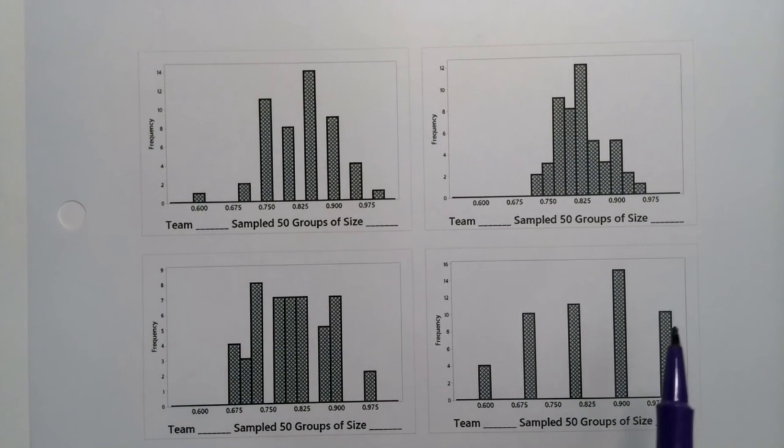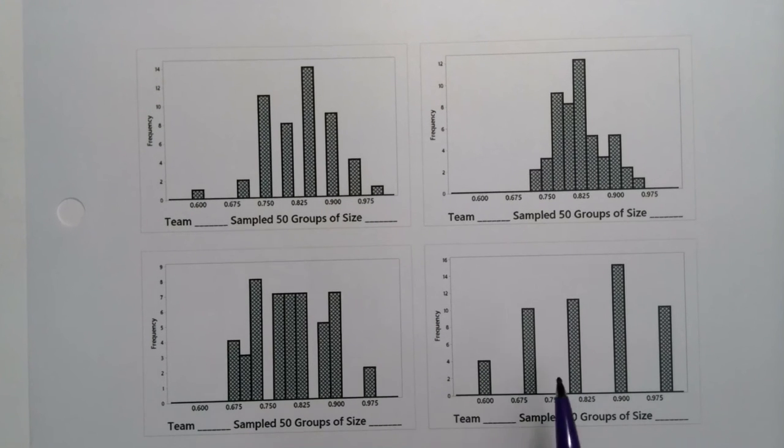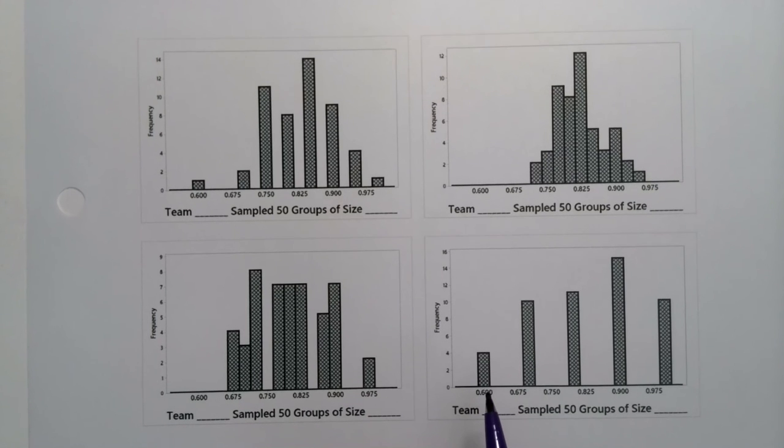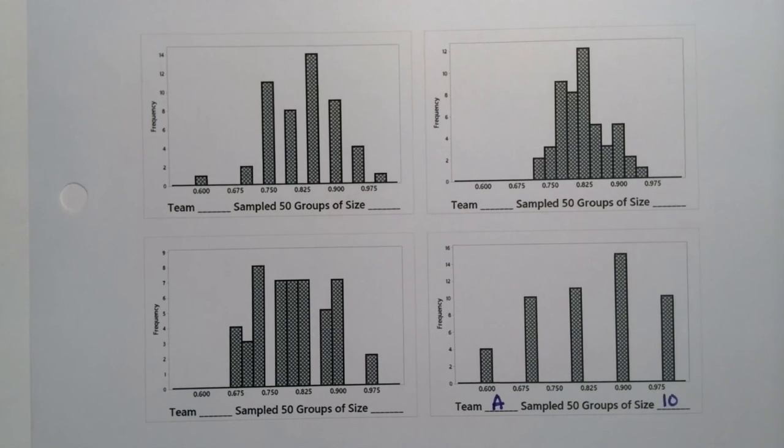The most spread is actually right here. Look, it goes from .600 all the way to past .975. And also the bars out there are really high, right? So there's a lot of groups that were out at .60, so 60% of the students had iPhones. So this is team A. This is the most spread. Their sample size is only 10.